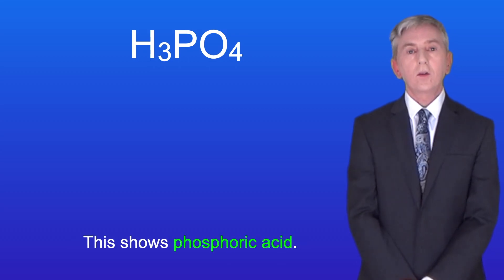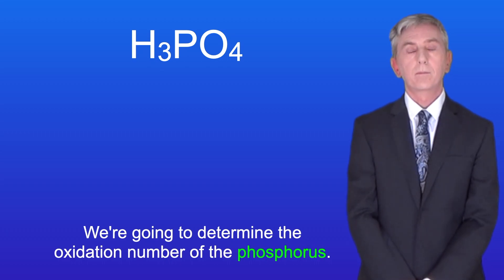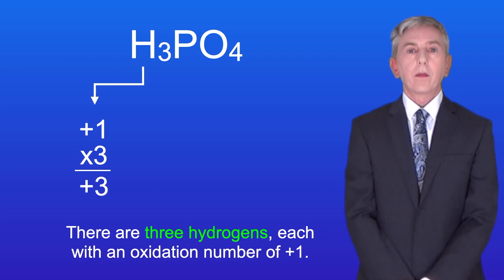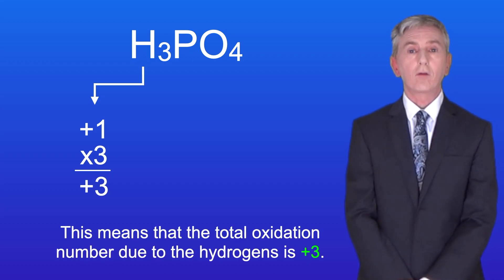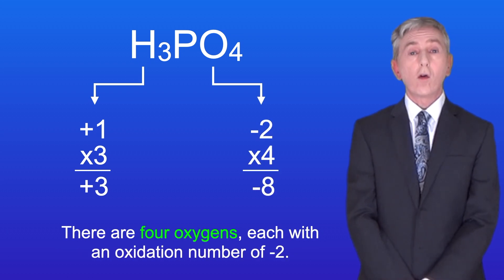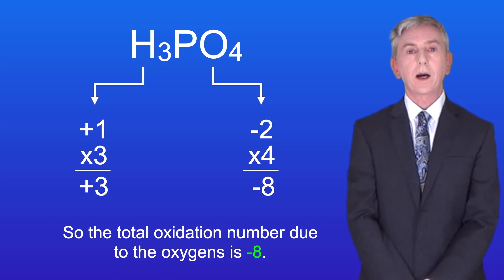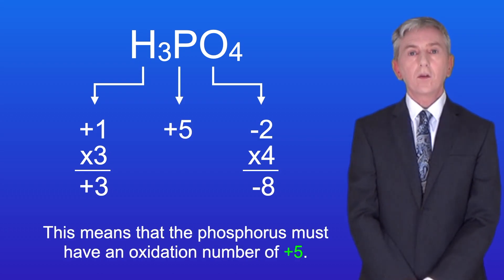Here's another example. This shows phosphoric acid. We're going to determine the oxidation number of the phosphorus. The overall charge of the molecule is zero. There are three hydrogens each with an oxidation number of plus one, so the total oxidation number due to the hydrogens is plus three. There are four oxygens each with an oxidation number of minus two, so the total oxidation number due to the oxygens is minus eight. The molecule has an overall charge of zero, which means that the phosphorus must have an oxidation number of plus five.